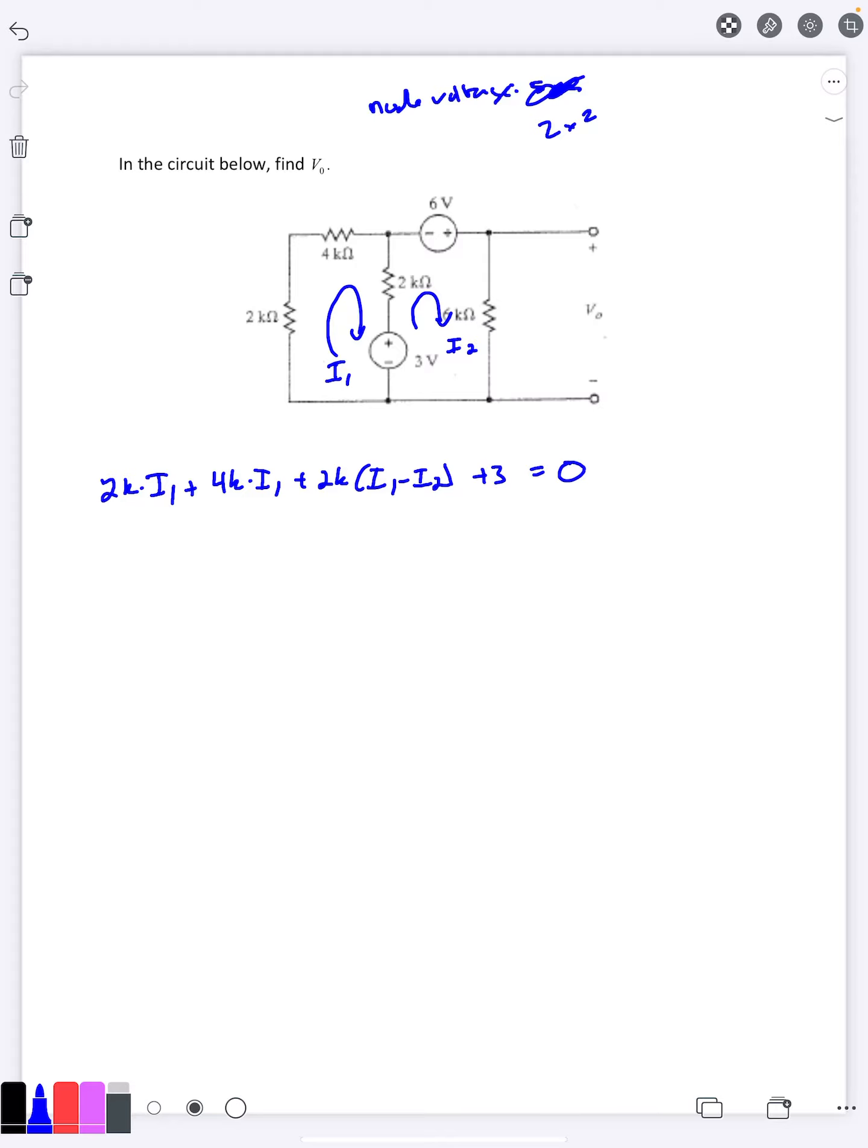Then for a KVL at our second loop here, I'll go in a minus 3, then plus 2k (i2 minus i1), and then minus 6 volts.